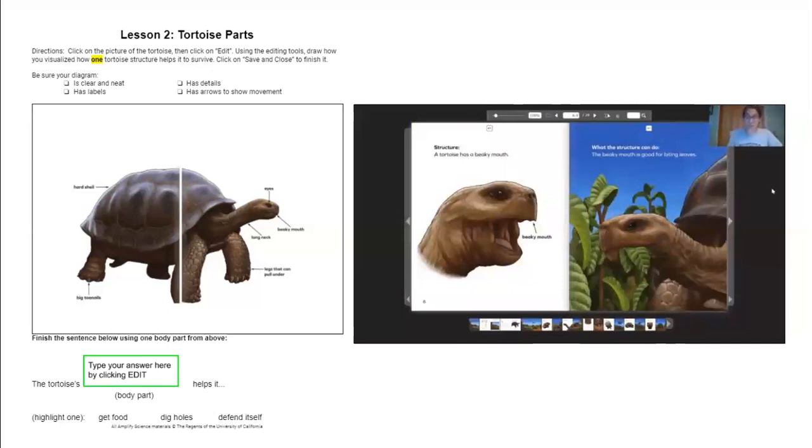So an important way that readers learn from a book is to visualize, just like I told you before. When you visualize, you make a picture or a movie in your mind. The tortoise uses this structure, the beaky mouth, to bite leaves. We can see in the picture that the beaky mouth is sharp. And I can visualize in my mind or make a movie in my mind about the sharp beaky mouth biting leaves, ripping the leaves off of the plant. And then I visualize the tortoise putting it in his mouth, closing it, and chewing the leaves. The beaky mouth helps the tortoise survive because it helps the tortoise get the food that it needs to survive.